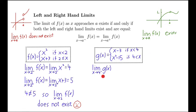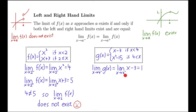Take the limit as x approaches four from the left. That minus sign means we're coming from the left, so x is less than four and we use the x minus three piece. We plug in four — remembering that the minus means from the left, not negative four, so we still plug in positive four. Four minus three is equal to one.